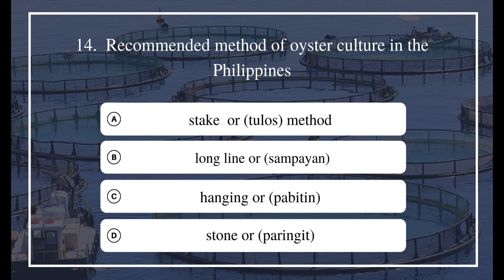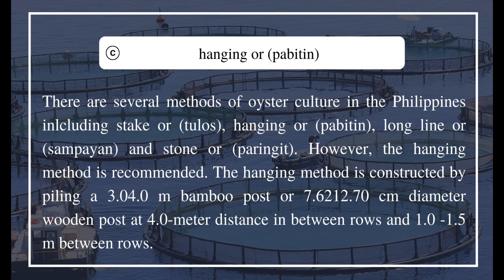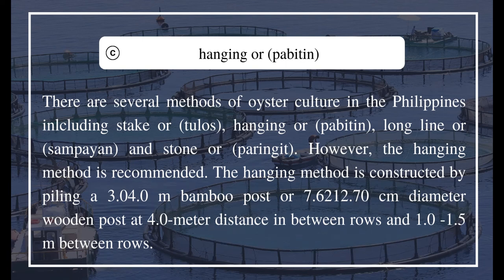Question 14: Recommended method of oyster culture in the Philippines — a) Stake or 'tolos' method, b) Long-line or 'sampion,' c) Hanging or 'habitant,' d) Stone or 'paringet.' The hanging method is recommended. It is constructed by piling a 3.0–4.0 m bamboo post or 7.62 cm diameter wooden post at 4.0 meter distances between rows and 1.0–1.5 m between posts.